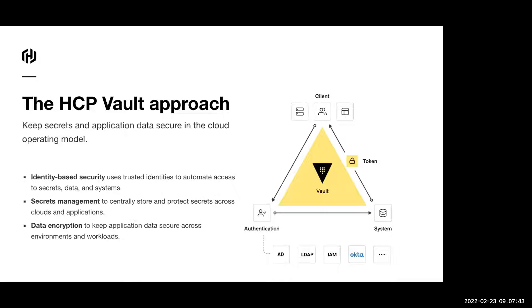At the simplest level, Vault is a secrets manager that sits on your network where you can put secure data — things like usernames, passwords, API keys, all that kind of stuff. It's primarily for machine-to-machine access. So, for example, a web app that needs a username and password to access a particular database will talk to Vault, pull those credentials, and then make that connection.